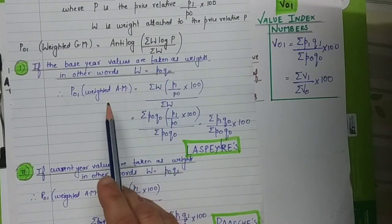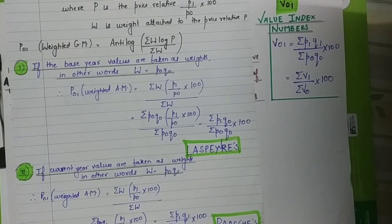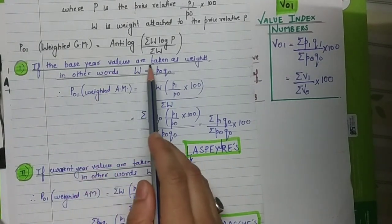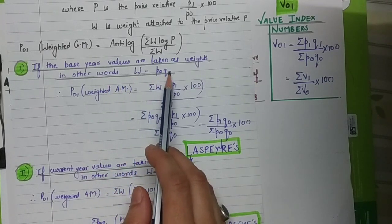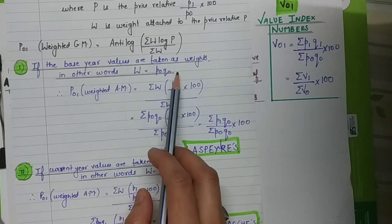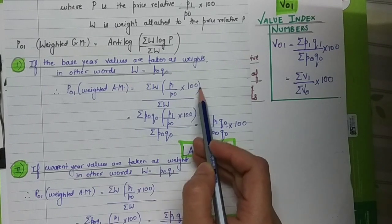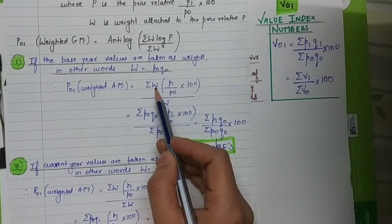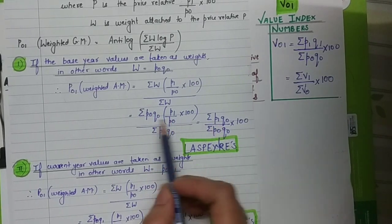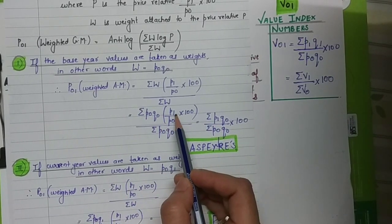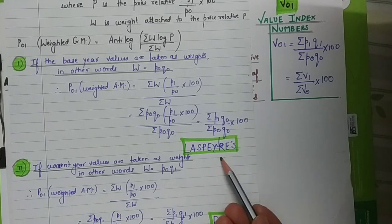There are two different cases to understand. The first case is when base year values are taken as weights — in other words, W equals P0 multiplied by Q0, the price of the base year multiplied by the quantity of the base year. Substituting this into the arithmetic mean formula, P0 cancels, and the numerator becomes sigma(Q0 × P1), giving us sigma(P1Q0) divided by sigma(P0Q0) into 100. This is Laspeyre's index number.